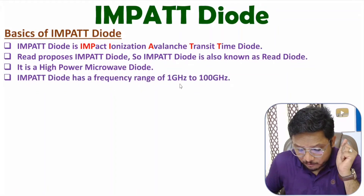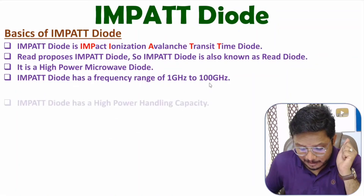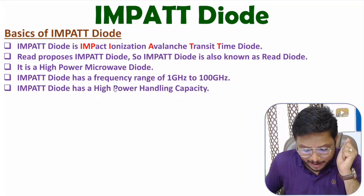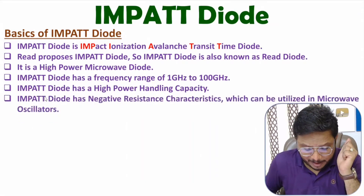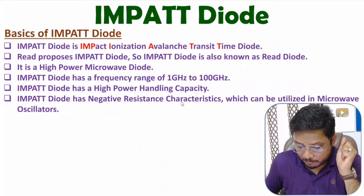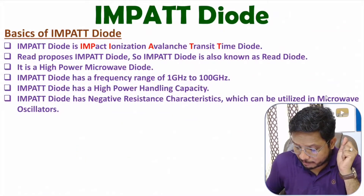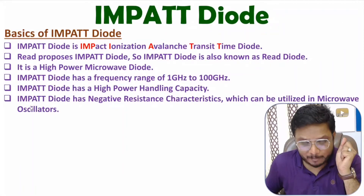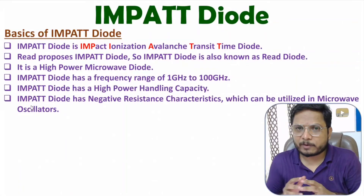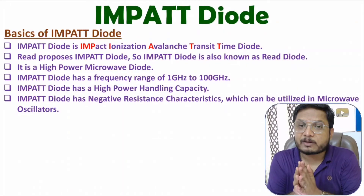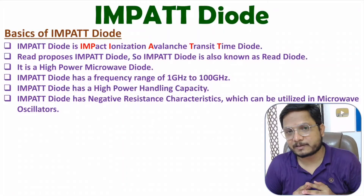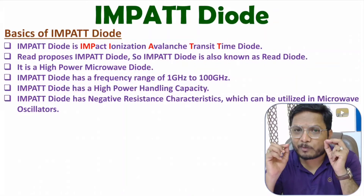IMPATT diode has a frequency range of 1 to 100 GHz and high power handling capacity. It also has negative resistance characteristics, because of which one can use IMPATT diode in microwave oscillations as well as in microwave amplifications.